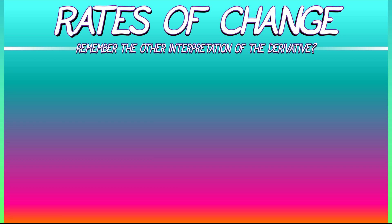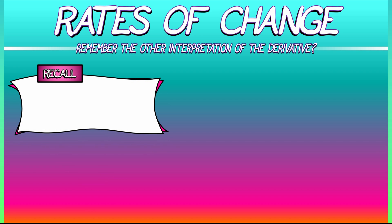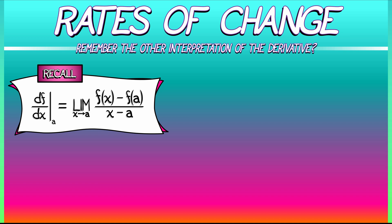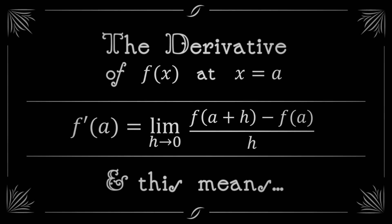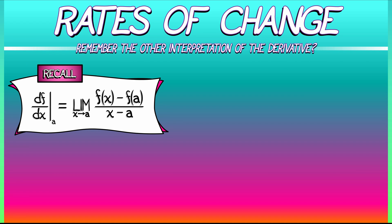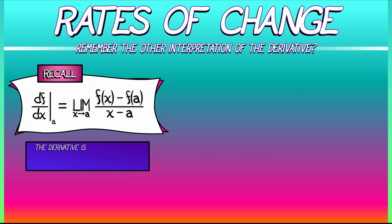In fact, thinking of derivatives as rates of change is an extremely important interpretation of the derivative. Let's remember how that works based on a slight variation of the definition. Recall: one way to define the derivative of f with respect to x evaluated at x equals a is as the limit as x approaches a of f of x minus f of a, divided by x minus a.